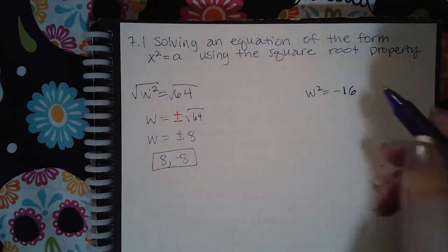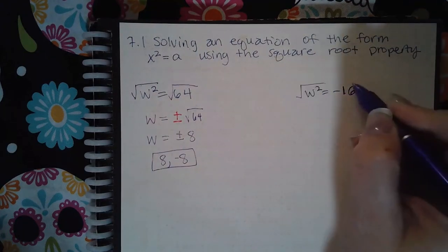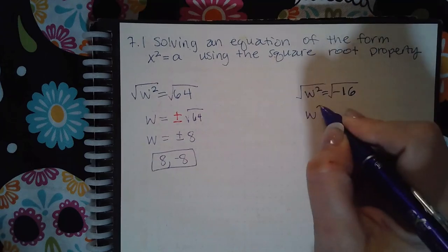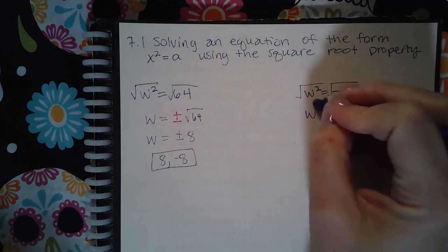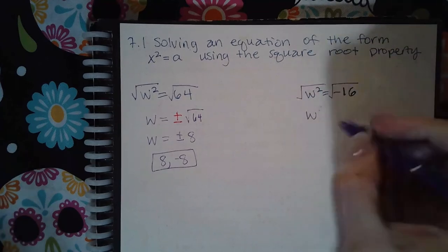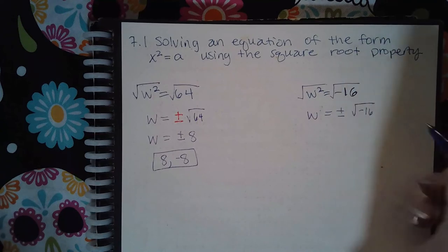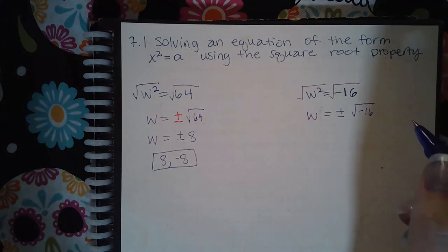Similarly, over here if I take the square root on both sides, I get w by itself, but then I get plus or minus the square root of -16. Now depending on the problem,